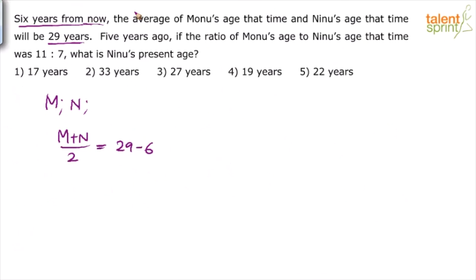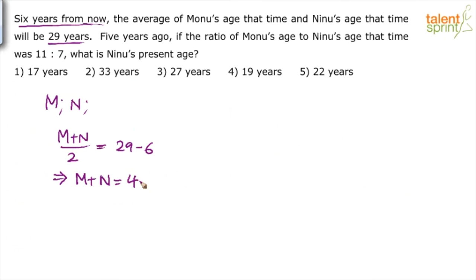From now, if you take six years, Monu's age will increase by six years and Ninu's age will also increase by six years. So both of them have increased by six years and then the average becomes 29. If both are reduced by six years, the average also gets reduced by six. So the present average is 29 minus 6, which is 23. Therefore, Monu's age plus Ninu's age equals 23 × 2 = 46.